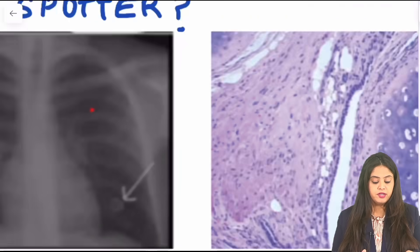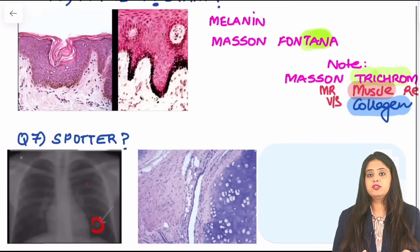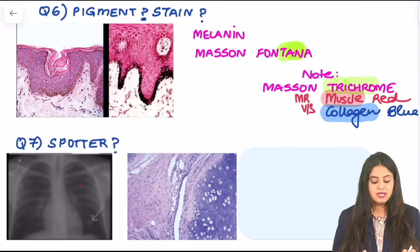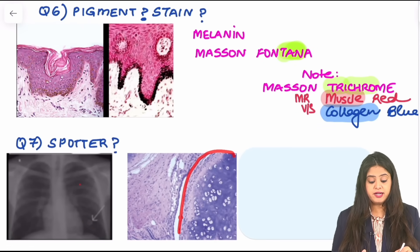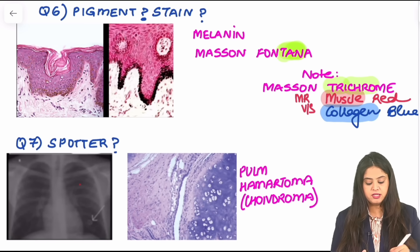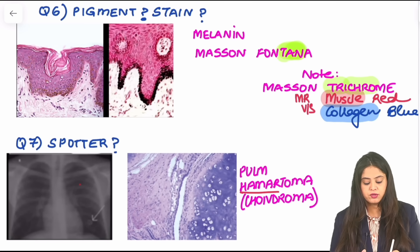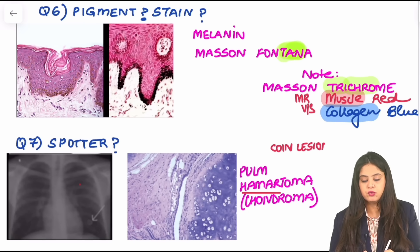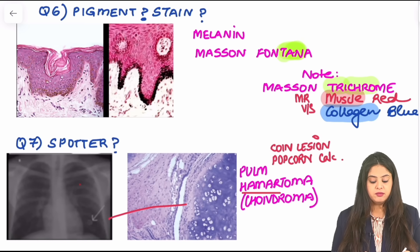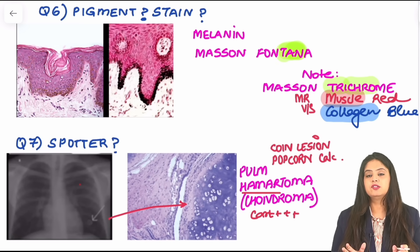Question 7 shows both a radiology image and a pathology image of the lung. The radiology shows a coin lesion. The histology shows blue-staining cartilage. This is pulmonary hamartoma — the most common benign tumor of the lung. The mnemonic: 'humare paise' means coin lesion radiologically, and 'hamara popcorn' means popcorn calcification can also be seen. Under the microscope, abundant cartilage confirms it is a type of chondroma — a benign tumor of the lung.